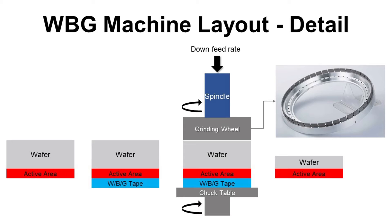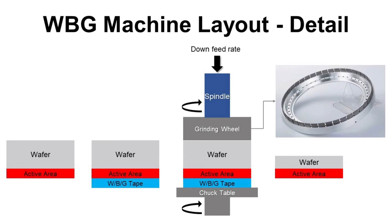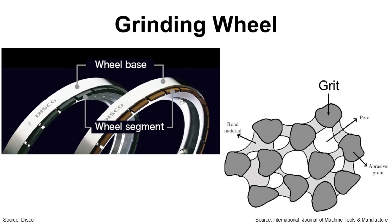With these actions, part of the wafer is removed and the thickness is reduced. Here are the key process parameters of wafer backgrinding. For the spindle, rotation speed, down feed rate, and down position are important. In this example, there are 4 spindles, and at each stage wafer thickness is reduced. Typically at the first spindle, a coarse mesh grinding wheel is used. For the chuck table, rotation speed is also important.